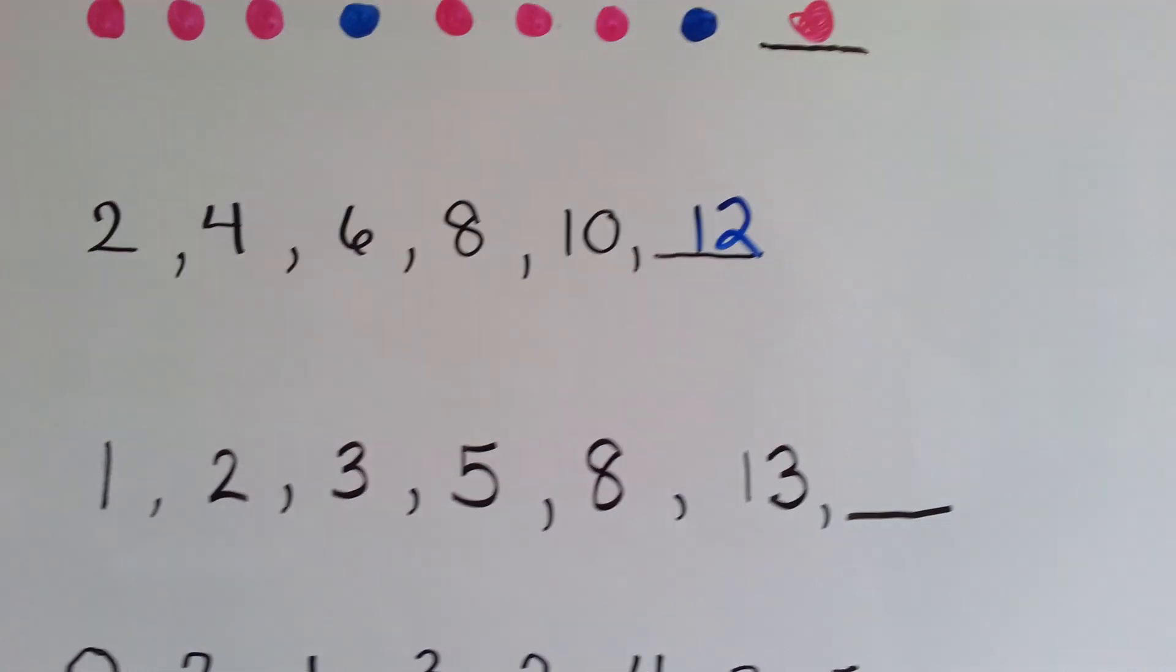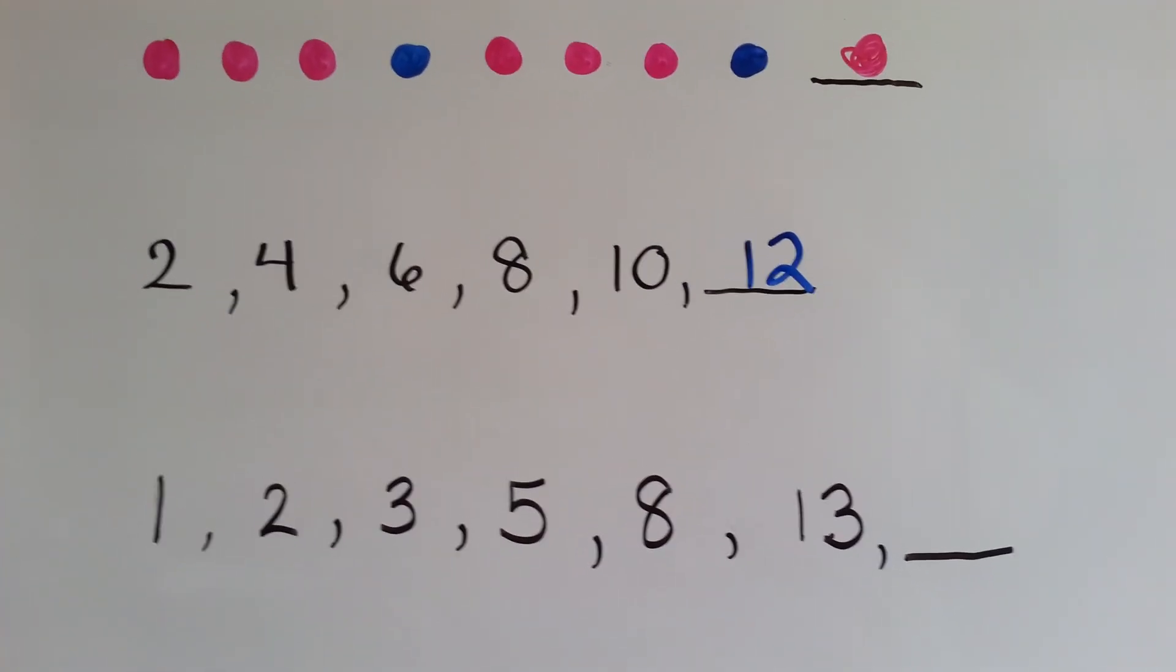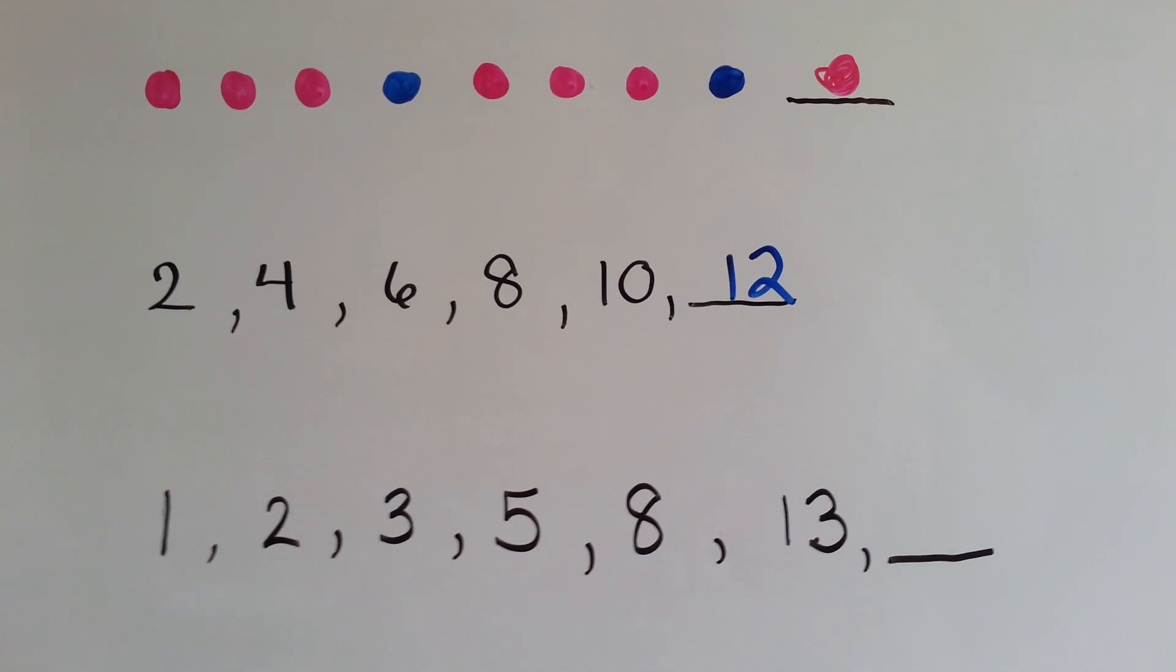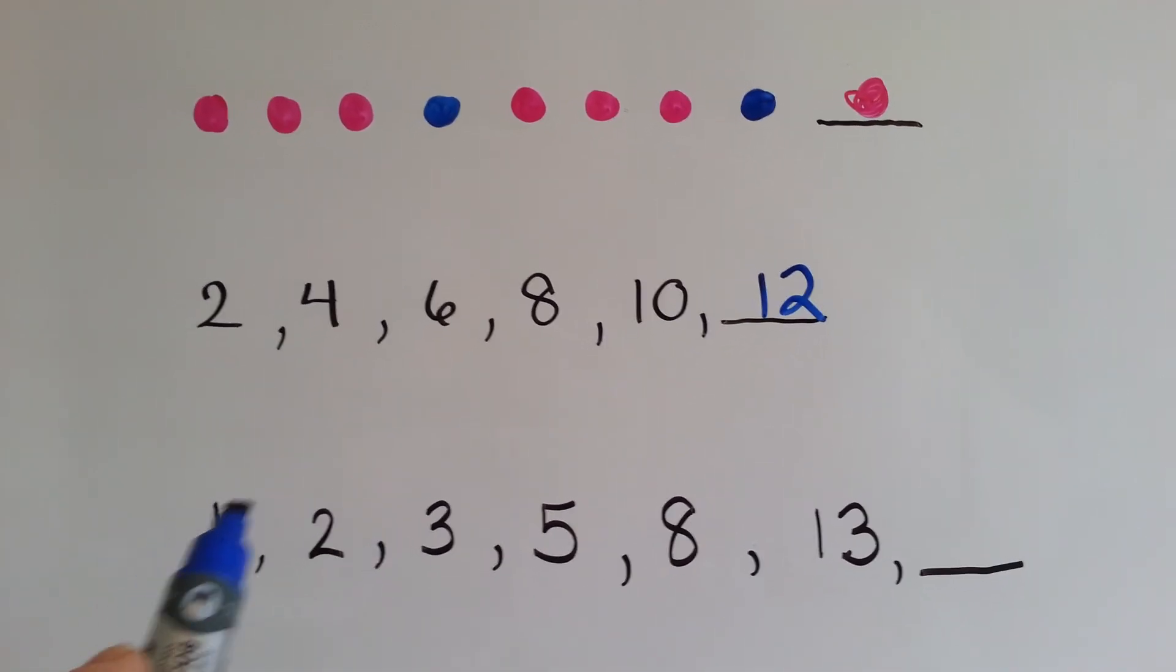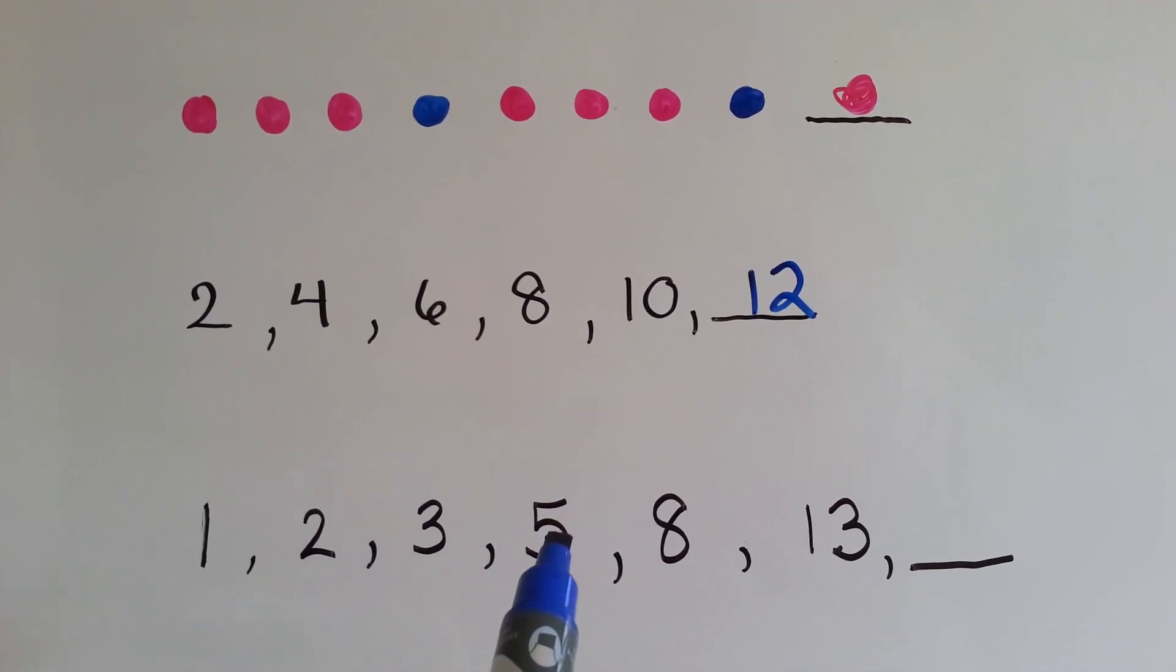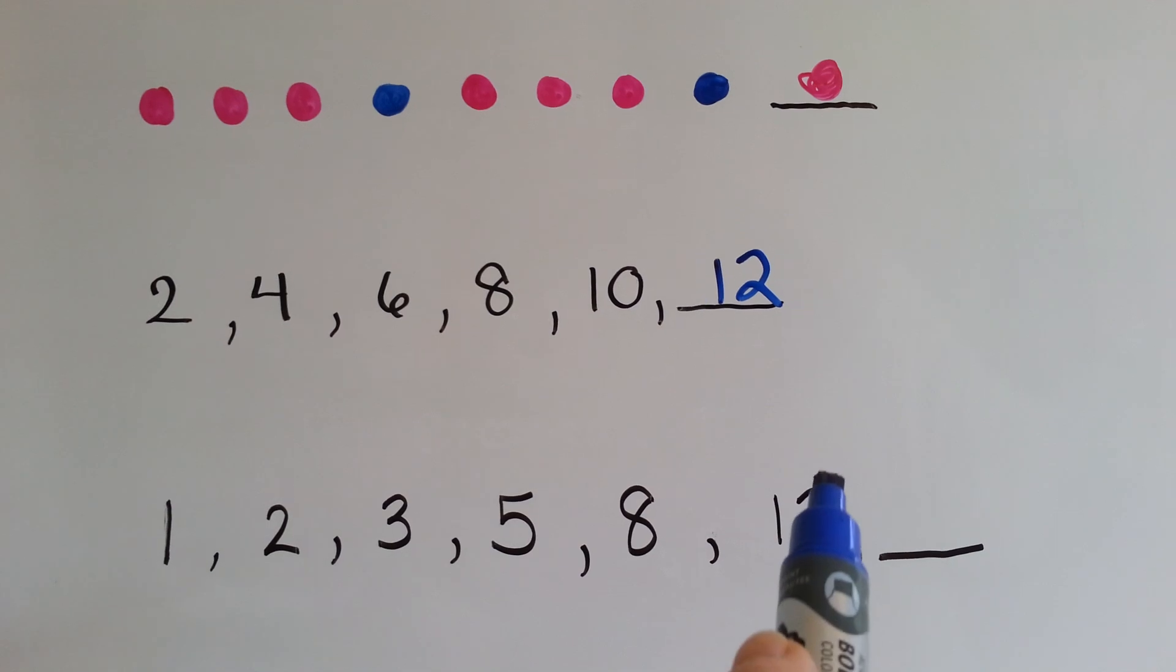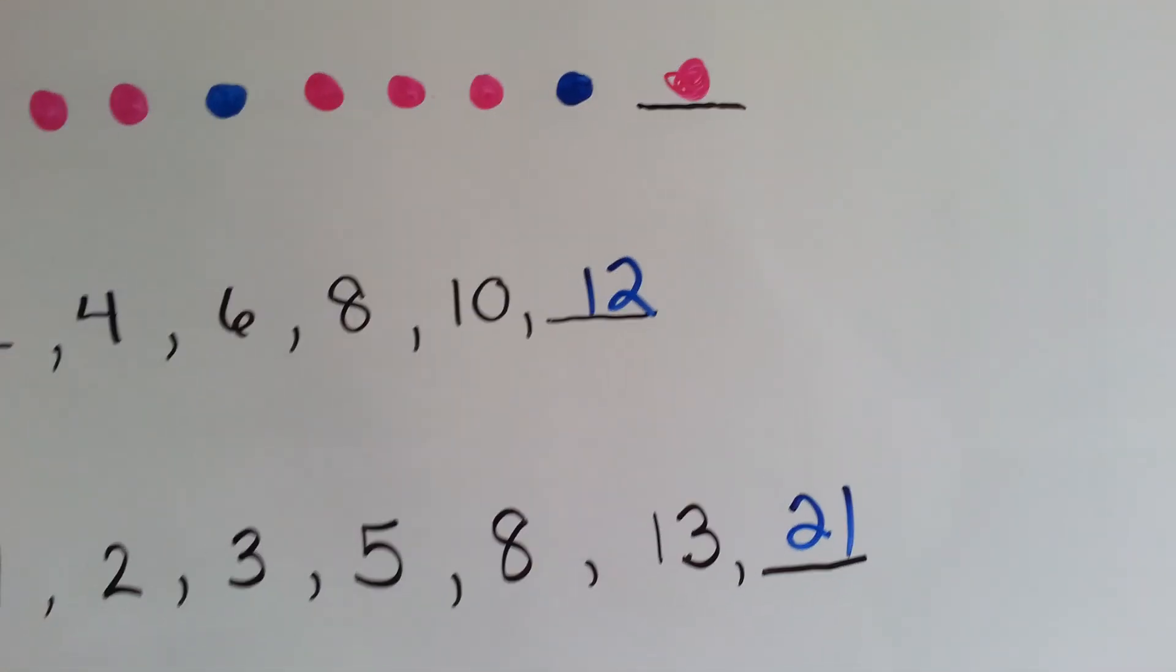How about this one? What is the next term in this pattern? This one's a little harder. Can you figure out what the pattern is? It goes 1, 2, 3, 5, 8, 13. What is it doing? Well, if you look closely, 1 plus 2 is 3. 2 plus 3 is 5. 3 plus 5 is 8. 5 plus 8 is 13. So, 13 plus 8 is, if you said 21, you were right.